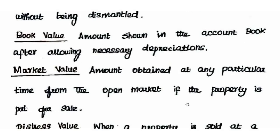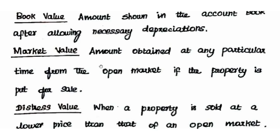Next is market value. Market value is the amount obtained at any particular time from the open market if the property is put for sale. So if we sell a property at a particular time through, for example, a newspaper advertisement, the price obtained is the market value.